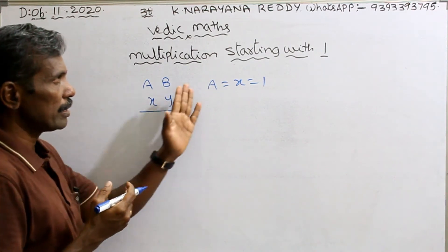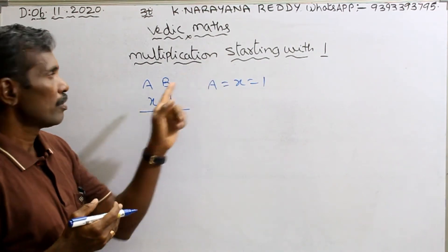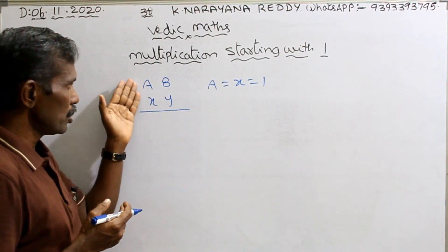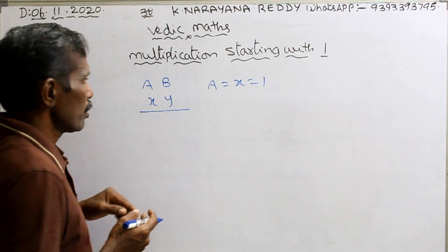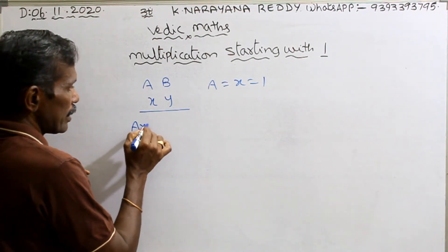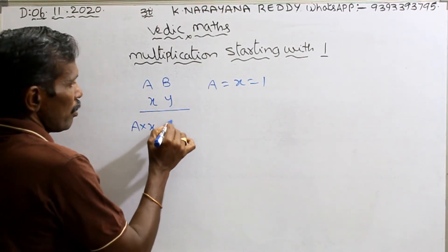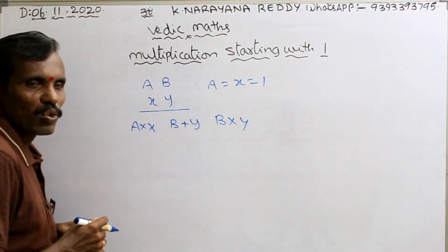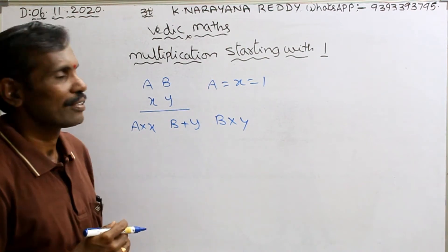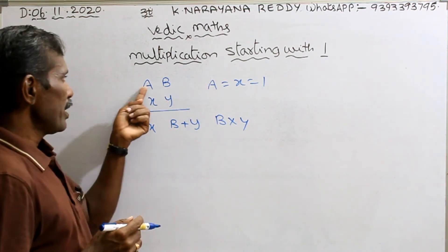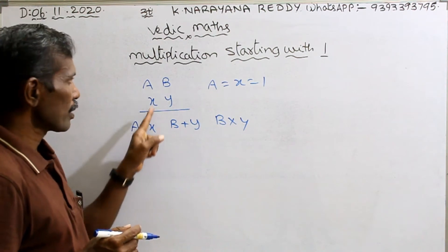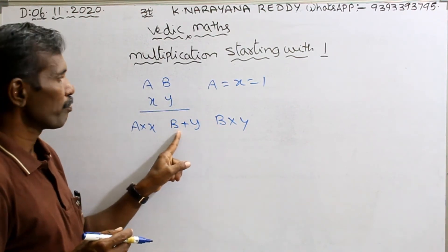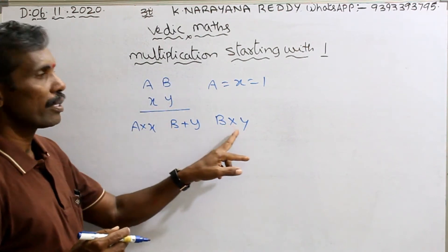What is the rule? The rule is: first digit from left — these two digits are 1. At that time: a into x, b plus y, b into y. That means a into x equals 1 into 1. Then b plus y — first you add, after that you multiply.